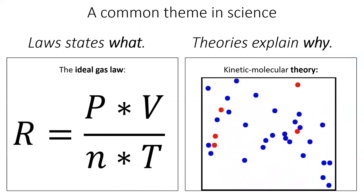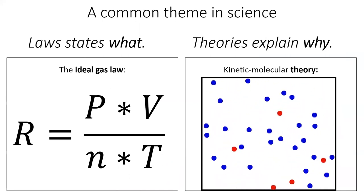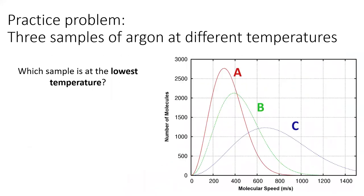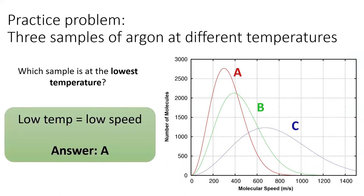Let's test your understanding with three practice problems related to molecular speed. On this slide, we see the distribution of speeds of three samples of argon gas. Which of these samples is at the lowest temperature? Since temperature is directly related to kinetic energy, which is directly related to speed, we know that the slowest sample, sample A, is the coldest sample.